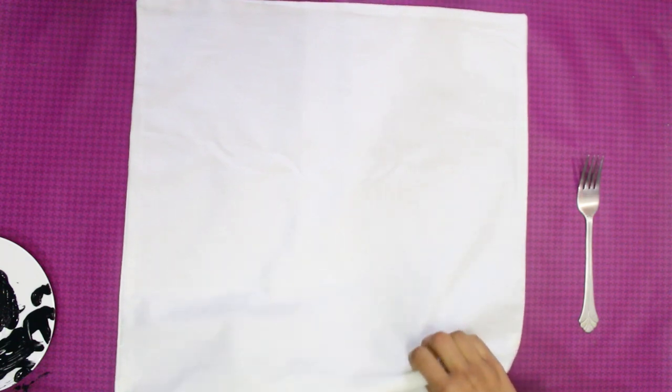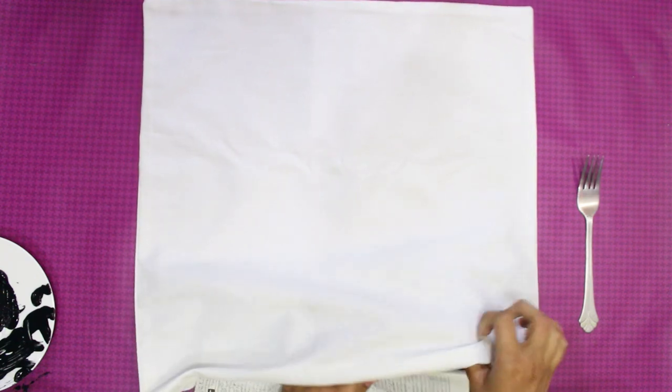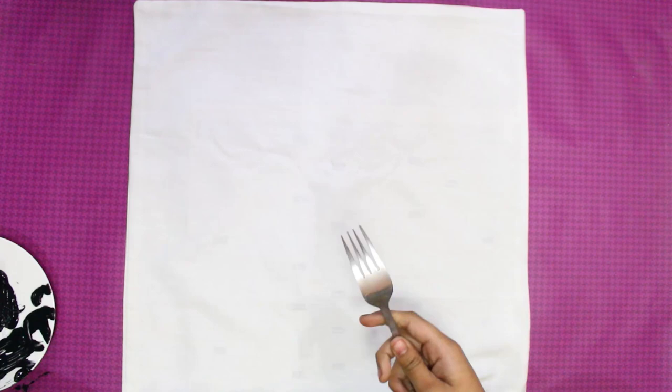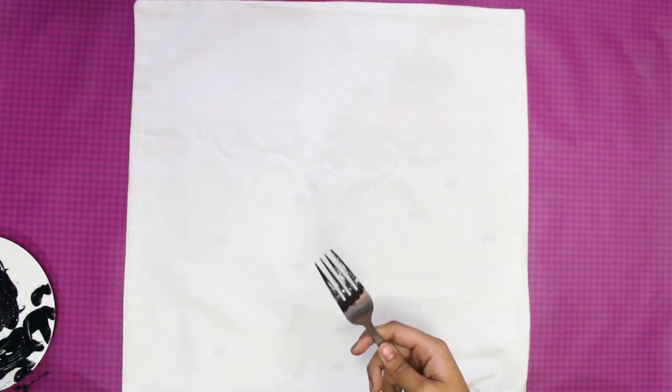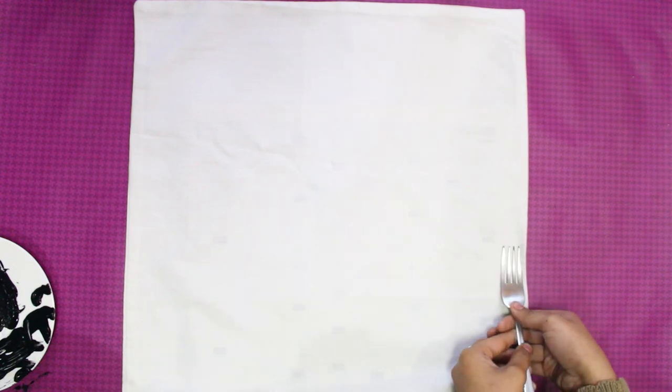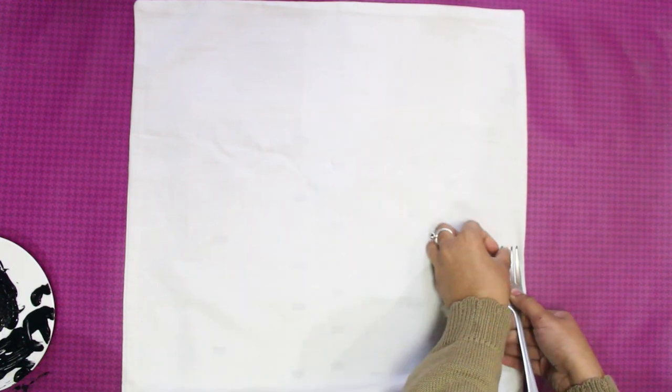For the third one, we are going to use a fork. Secure the cushion. Put some paint on the back side of the fork and stamp it on the cushion.